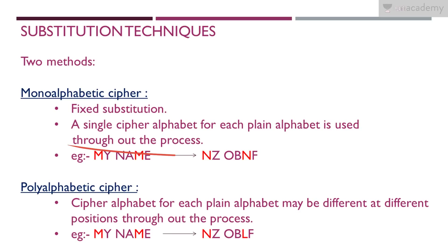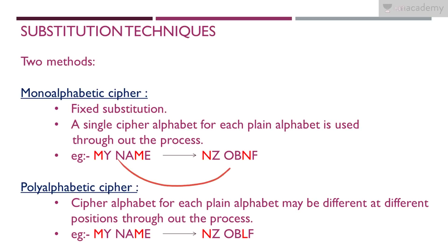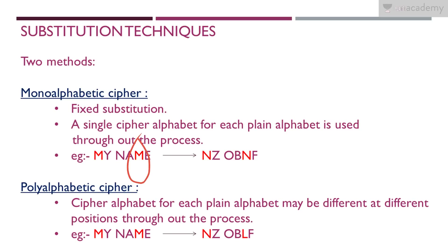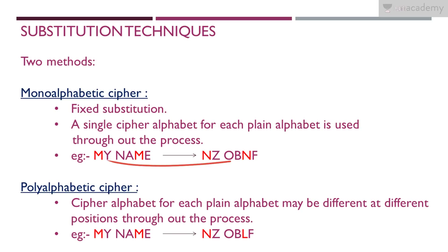Consider the example 'my name.' We have two M's here. For M I put N, for Y I use Z, for N I use O, for A I use B, for the second M I use N again, and for E I use F. We had two M's in the plain text and in the cipher text both are N — for M it is always N. That is fixed substitution — that is mono alphabetic cipher.